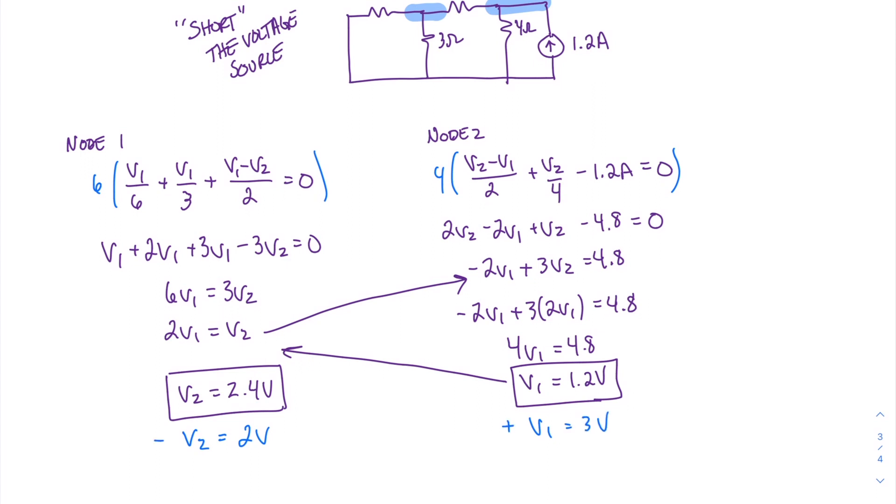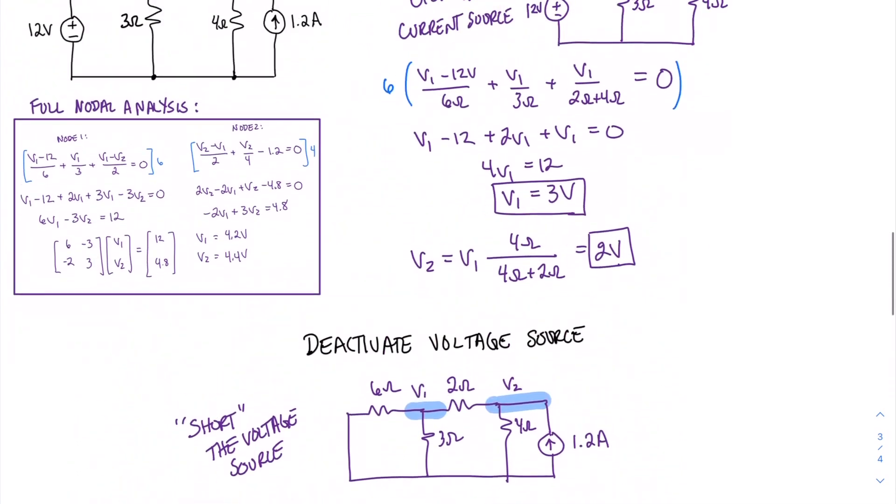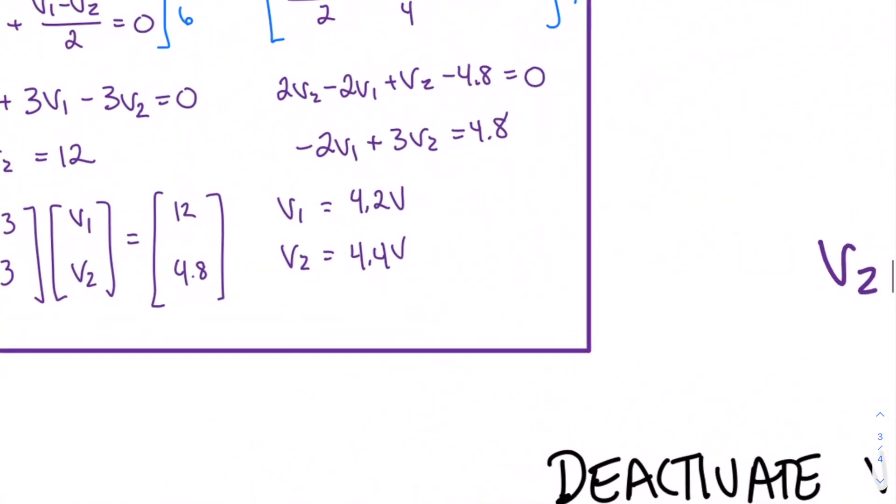Summing these up, we find that V2 is 4.4 volts, and V1 is 4.2 volts. And these two expressions for V1 and V2 match the expressions that we expected to get based on our full nodal analysis of the circuit. 4.4 volts for V2 and 4.2 volts for V1.